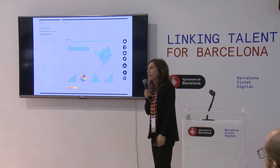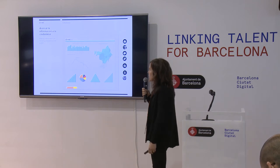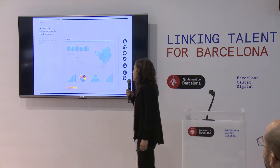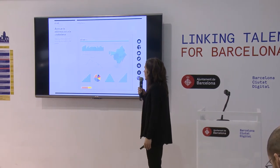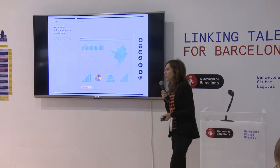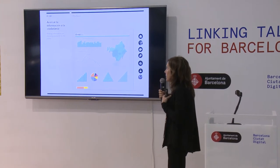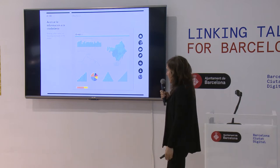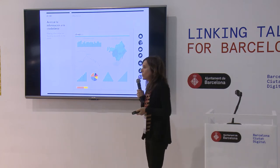Another very important goal of the observatory is to make information available to the public, because we want citizens to access the information easily. We want to be very communicative and have an attractive graphic design so that all people — technical people from the administration, from entities, and other people — can have access and consult all the data that we are going to offer.